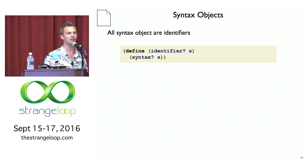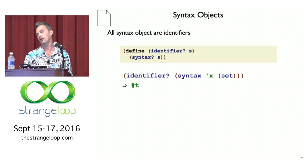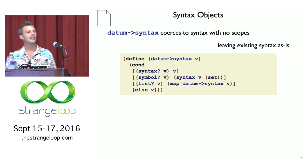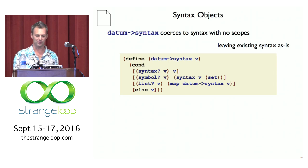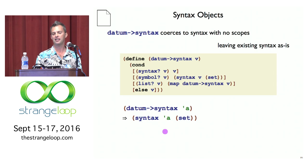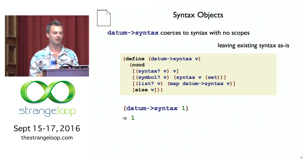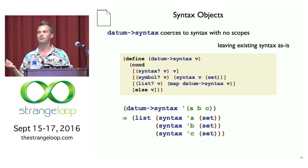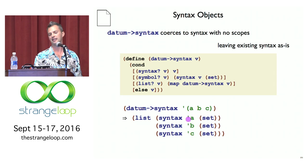In this simplified macro expansion, we're just putting scopes on identifiers — on syntax objects. Datum-to-syntax will be handy for writing tests or certain macros — it takes a plain S-expression and coerces it into the syntax object world by adding the empty set of scopes. Datum-to-syntax on a symbol A gives a syntax object with symbol A and no scopes. On a one or other non-identifier, it just leaves it alone. On a list of symbols ABC, it applies the empty scope recursively, so ABC becomes a list of syntax objects each with an empty set.